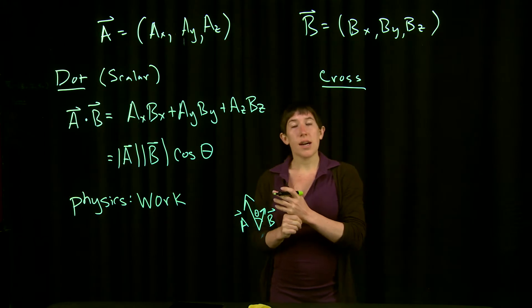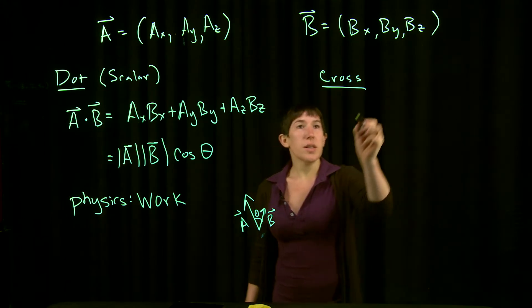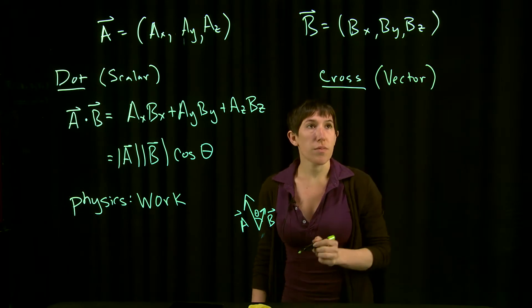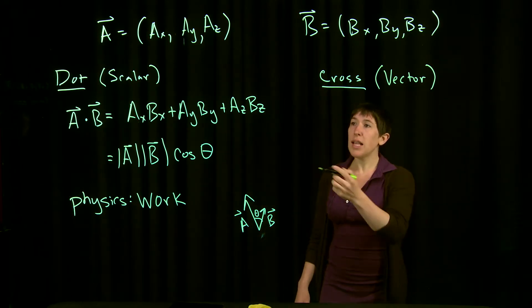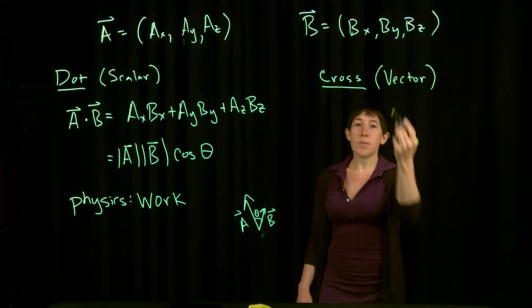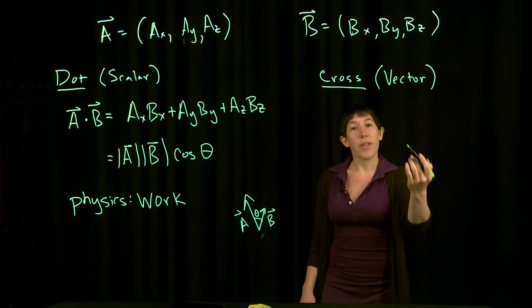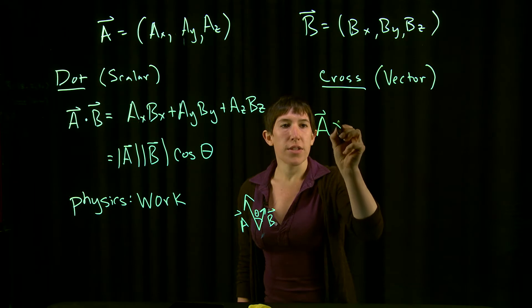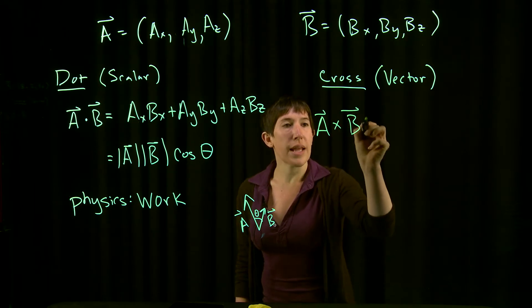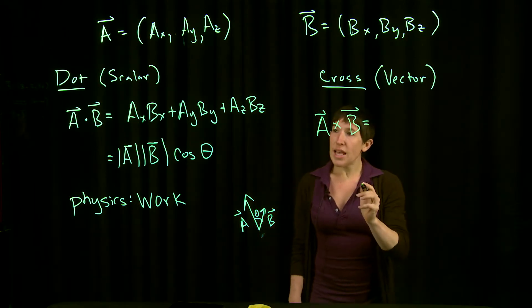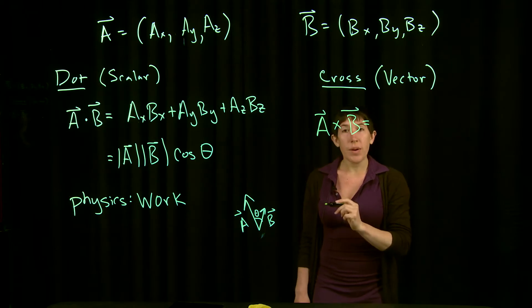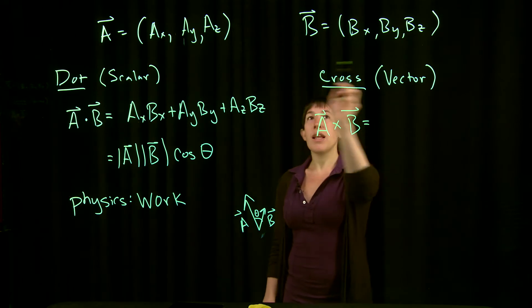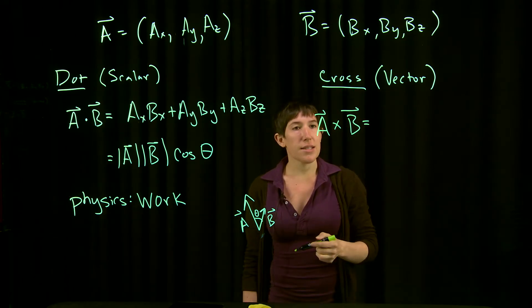The next thing we'll talk about is the cross product, sometimes also called the vector product. It's called that because unlike the dot product, here you multiply these two vectors together and you get another vector. This is denoted A cross B.